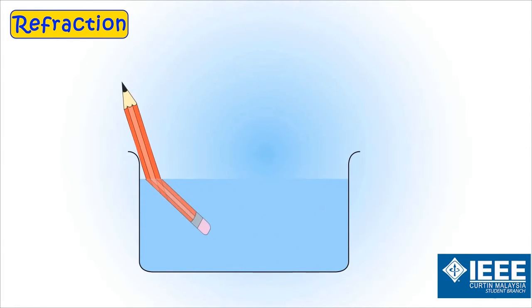We see the image of a pencil as if it is bent. Why does it happen so? Let's try to understand.